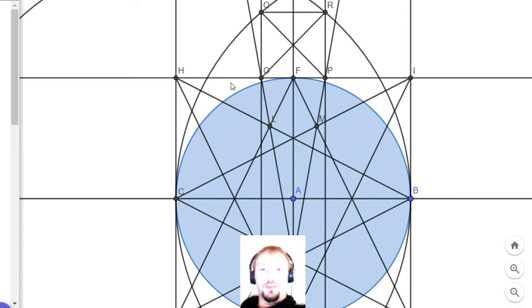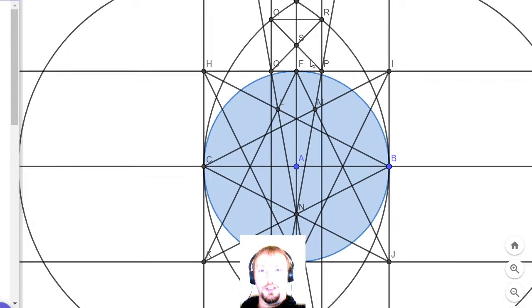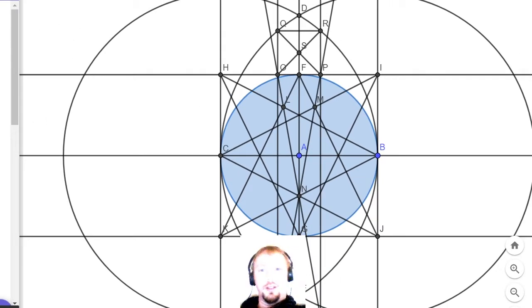So now I create a cross in the square that also intersects with the central vertical line so that I can find the center of this square and I can put a point there and that point is now called S. And we're nearly done.